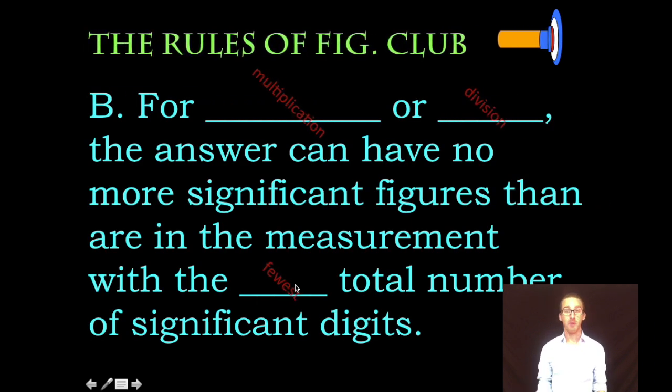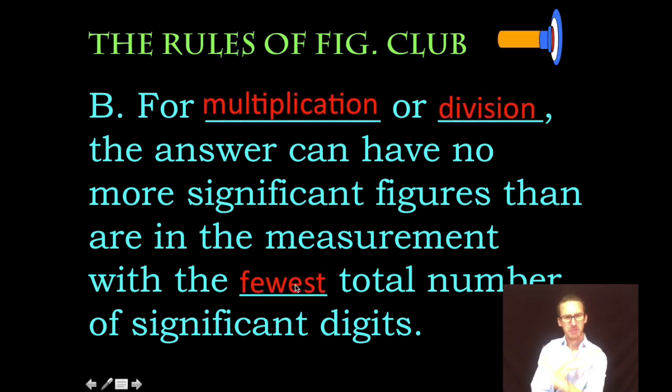Okay, but what happens if we are multiplying or dividing? Multiplication! I've got so many dance moves, I'd call this one division. Okay, the rule is a little bit different here. For multiplication and division, the answer can have no more significant figures than are in the measurement with the fewest total number of significant digits.